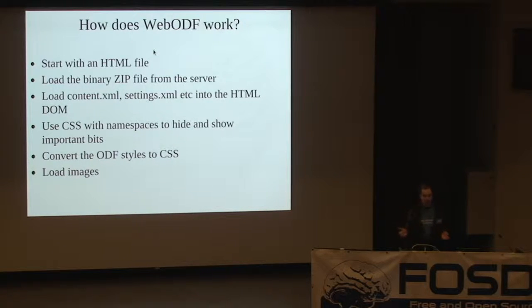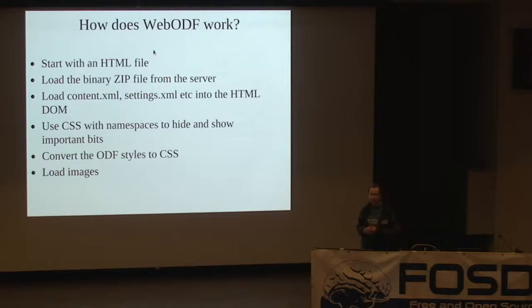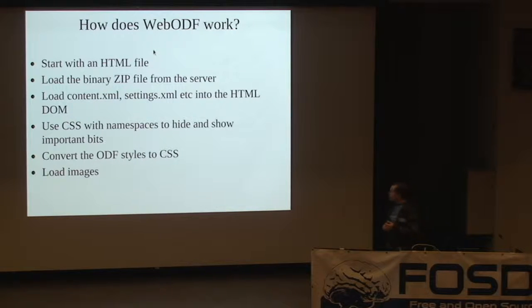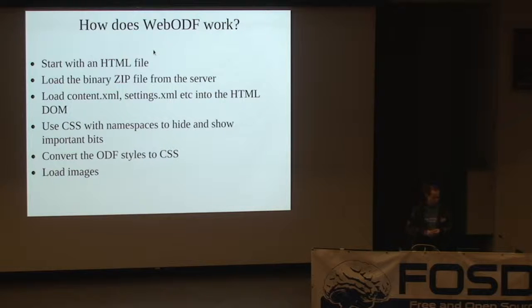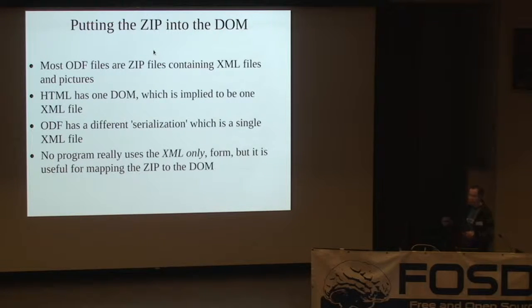Once you've got a lot of XML added to your document, the HTML standard says if it doesn't recognize a tag it will do nothing with it. So any normal text is just shown as plain text and it doesn't look like an office document at all. We need to use CSS with namespace support to hide and show the important bits and format them on a page, slide, or spreadsheet. Then we look at custom styles — bold, italic, font, size — and convert those to CSS so the file looks good. After that we load the images.